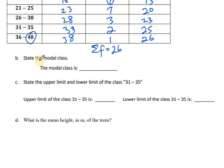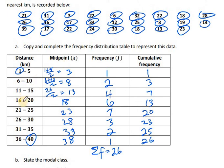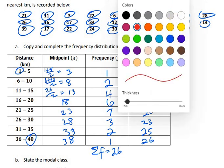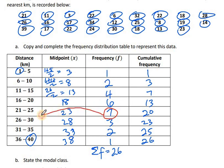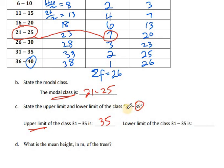Now we'll find the modal class — that is, the class with the most persons, or the highest frequency. Looking at the frequencies, the highest is 7. The class with 7 students is 21 to 25 kilometers. So the modal class is 21 to 25. The question also asks for the upper and lower limit of the class 31 to 35: the upper limit is 35 and the lower limit is 31.